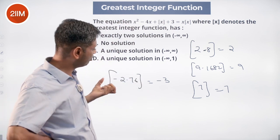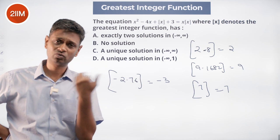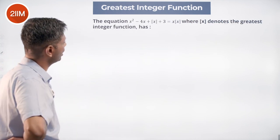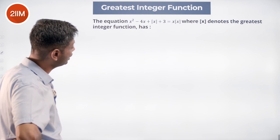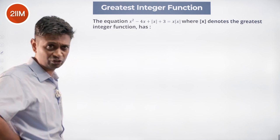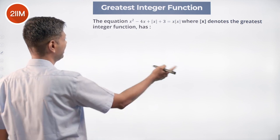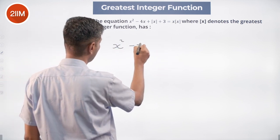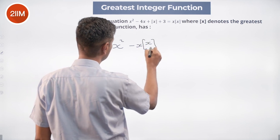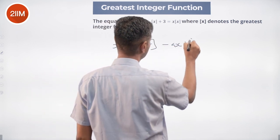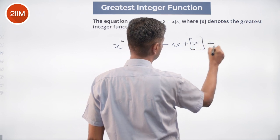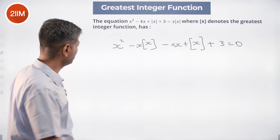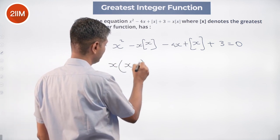So the equation is: x squared minus 4x plus greatest integer of x plus 3 equals x times greatest integer of x. Let's bring everything to one side: x squared minus x times greatest integer of x minus 4x plus greatest integer of x plus 3 equals 0. Now take out an x — x minus greatest integer of x.